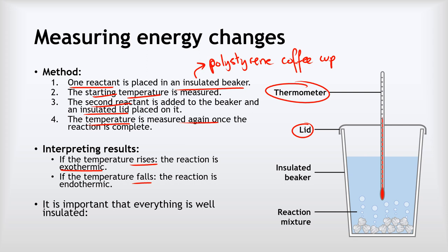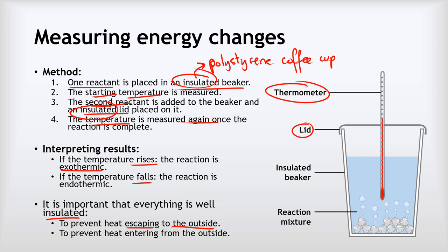It's worth making a note about the insulation. We need an insulated beaker and an insulated lid to prevent heat escaping to the outside and also to prevent heat entering from the outside, because we want to make sure that we're just measuring temperature changes directly involved with the reaction itself and not anything to do with the surroundings.